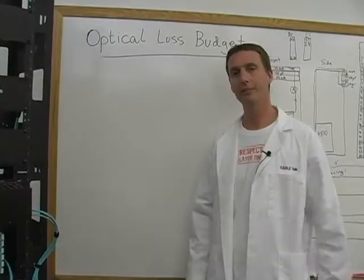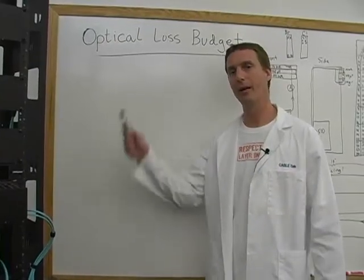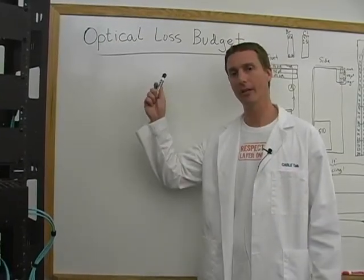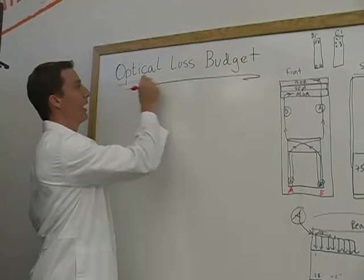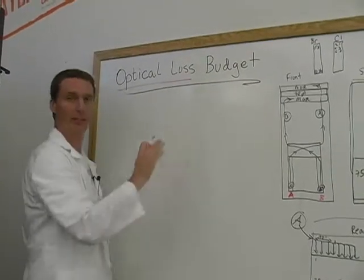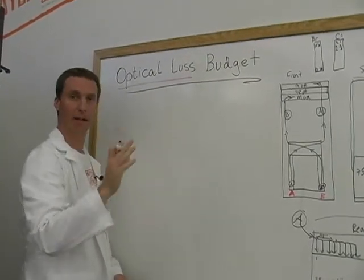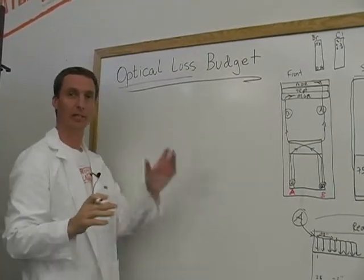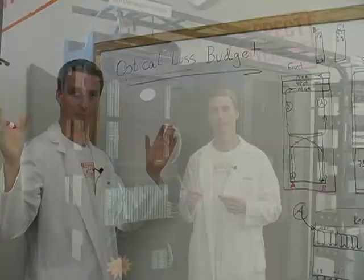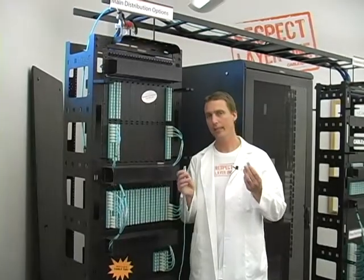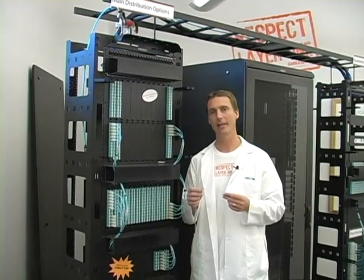First, let's break down the term optical loss budget. Optical loss is light that is lost between the transmitter and the receiver. Let's translate this into fiber optics.